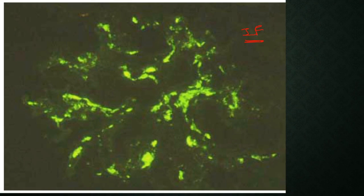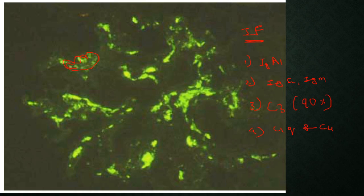The characteristic immunofluorescence finding of IgA nephropathy is diffuse granular mesangial staining for IgA. Important points: there should be dominant or co-dominant IgA deposits, predominantly IgA1. IgG and IgM can also be seen in up to 30% of cases, but staining will be less than IgA. C3 deposits may be seen in up to 90% of cases. Rarely, C1q and C4 deposits can be seen. Lambda light chain deposition is more common. IgA deposits in the capillary loops are associated with poor prognosis.